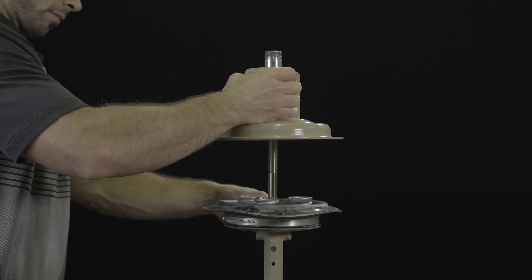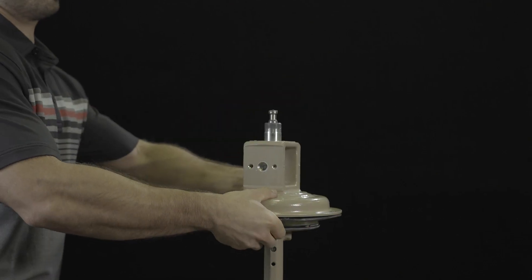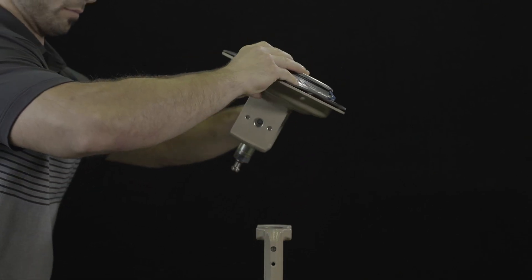Slide the bottom actuator case over the stem, flip the case and diaphragm plate assembly over.